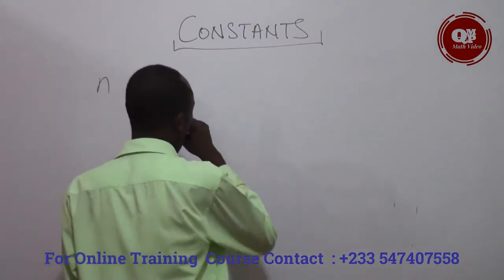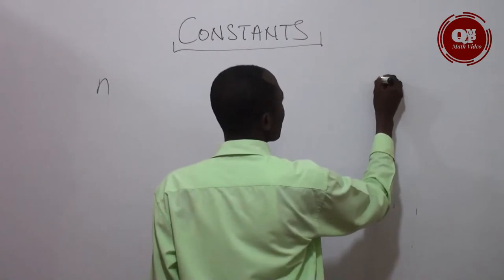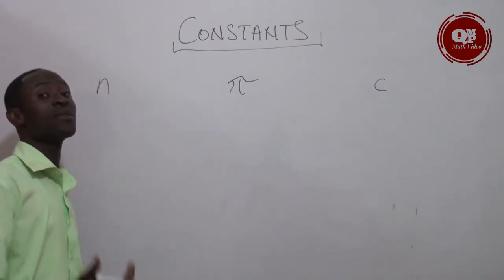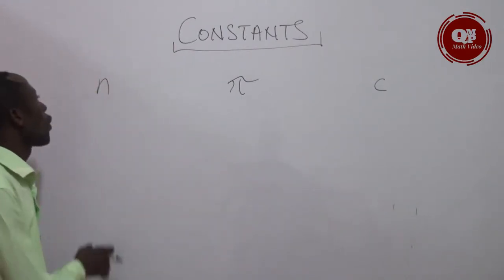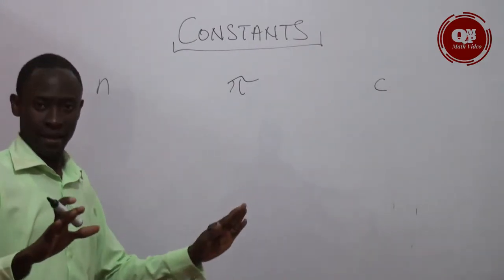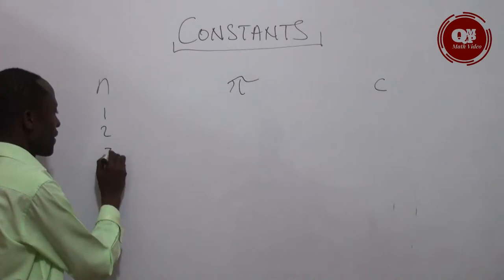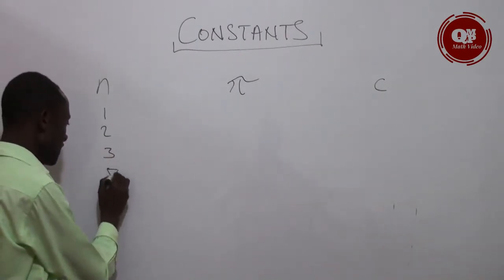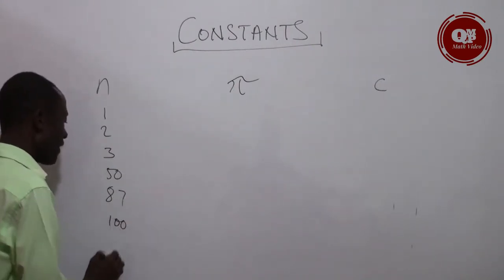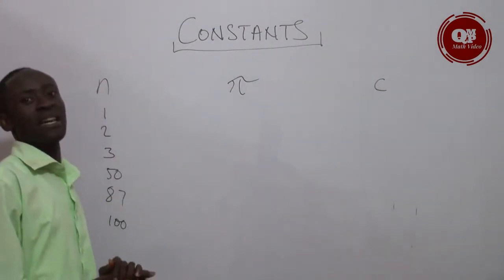We have one, we have two, and then we have three. I am going to use these to illustrate the forms of constants. With the introduction of n, I am referring to any number. Any number can be one, two, three, fifty, eighty-seven, hundred — any number is a constant. And that is what we should take note of.